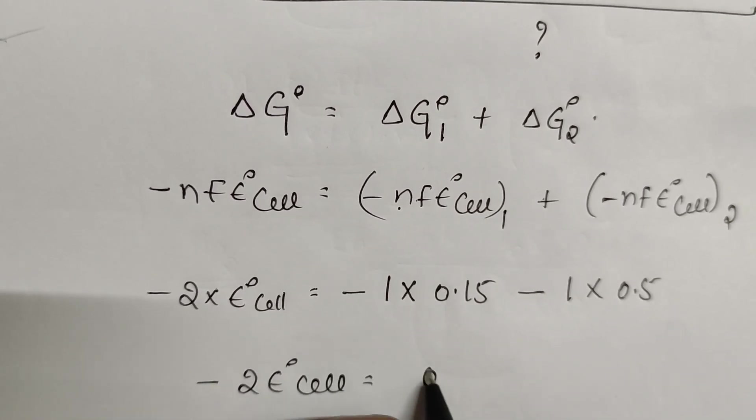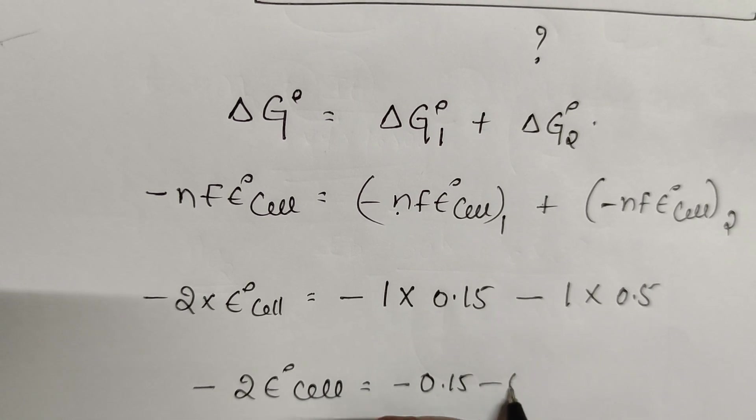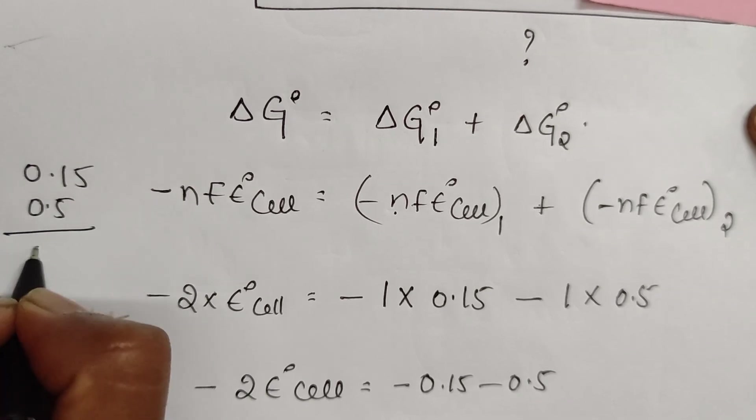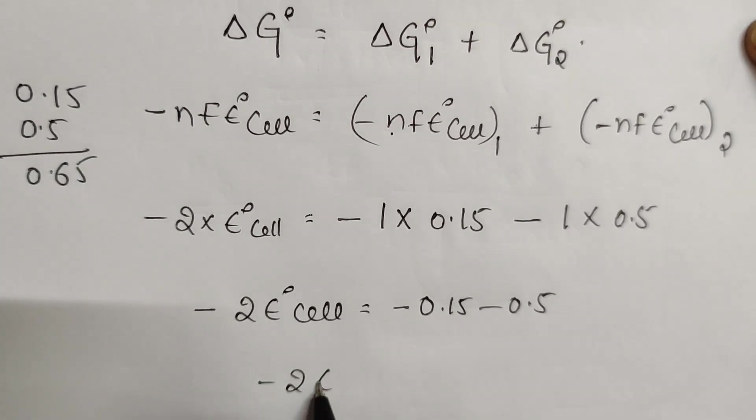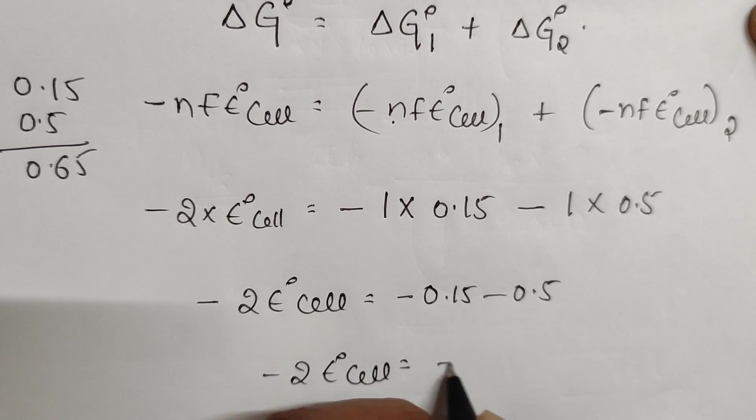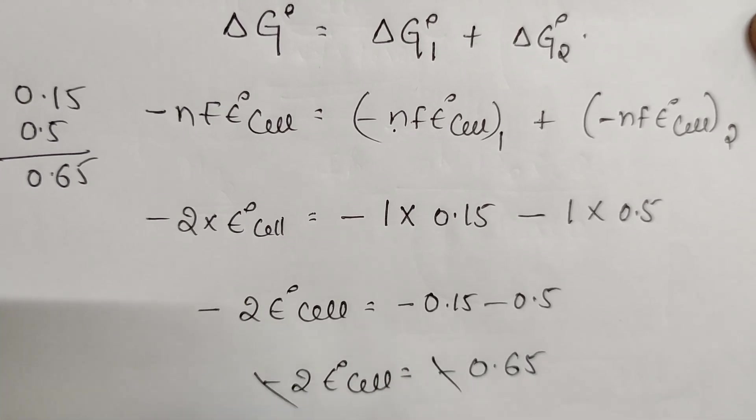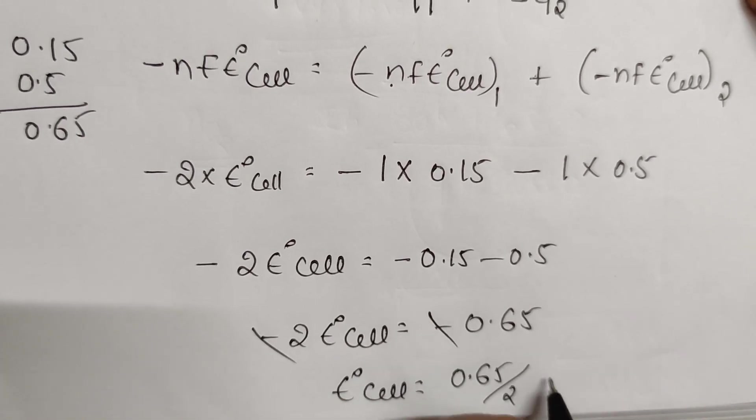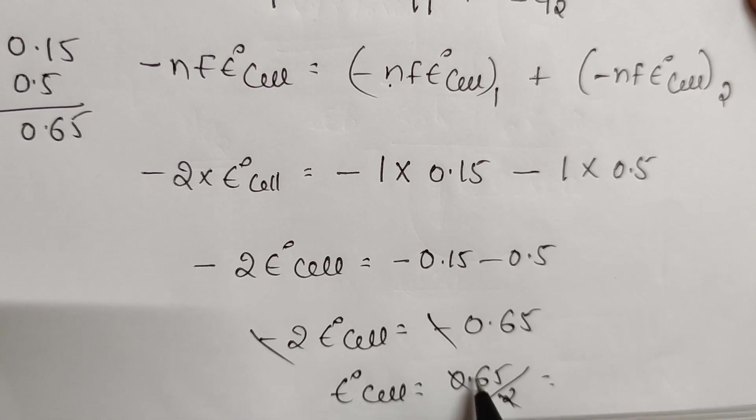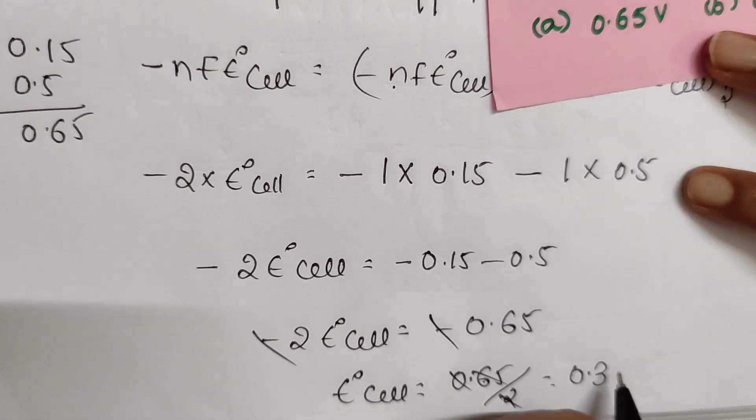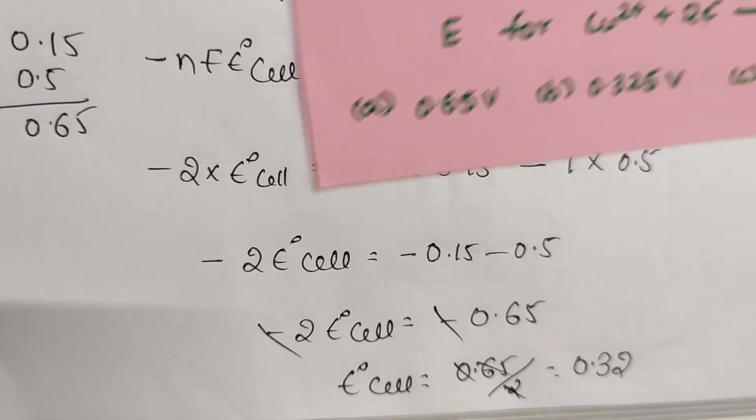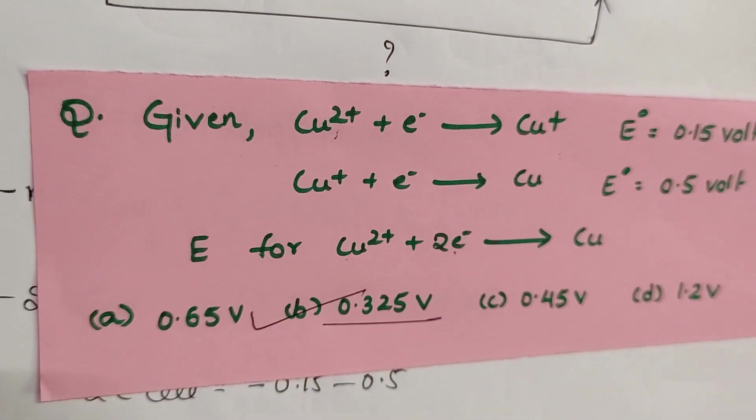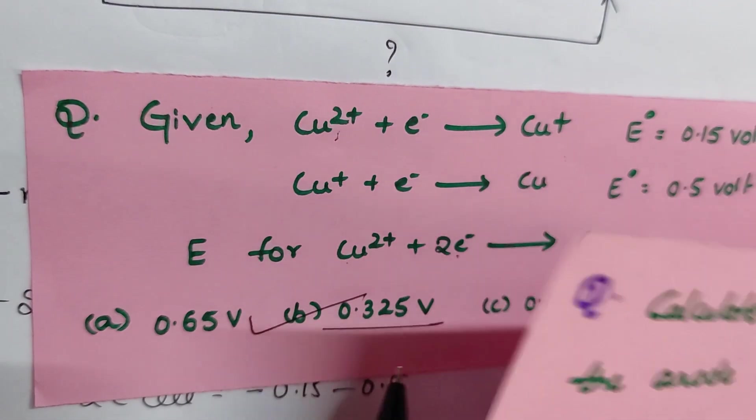Then minus 2 E°cell is equal to minus 0.15 minus 0.5. Minus of 0.15 and 0.5 is 0.65. Then minus 2 E°cell equals 0.65. Divide 0.65 by 2, then you will be getting around 0.32. Option B is your correct answer.